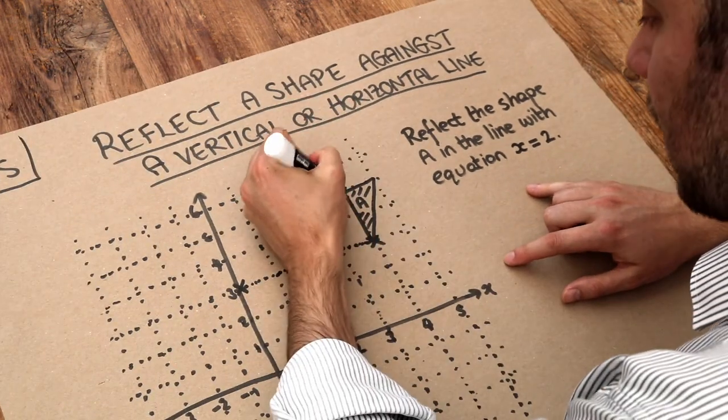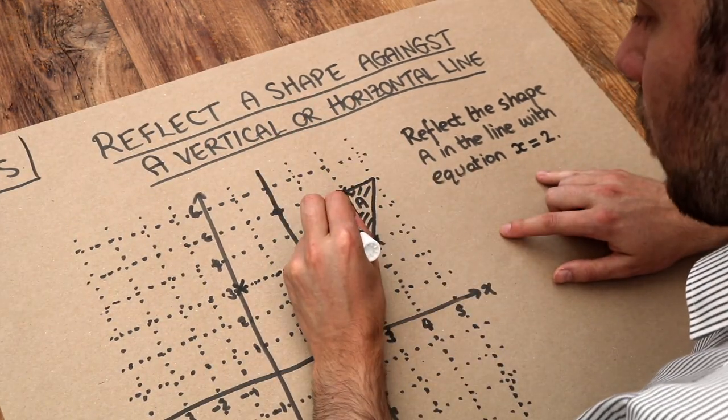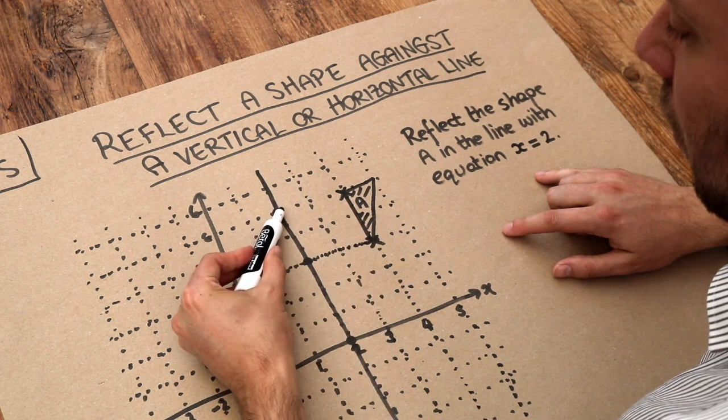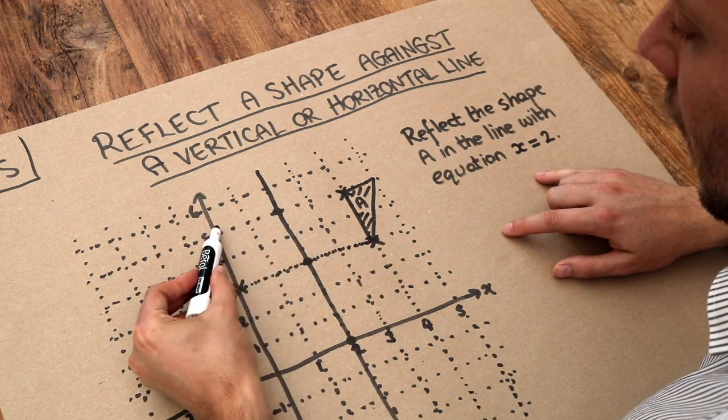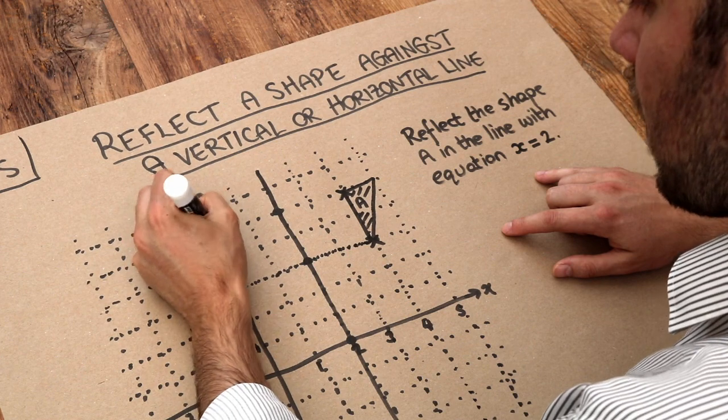What about this point here, this next corner? 1 square, 2 squares, we're now at the line of reflection, 1 square, 2 squares again, and we end up here.